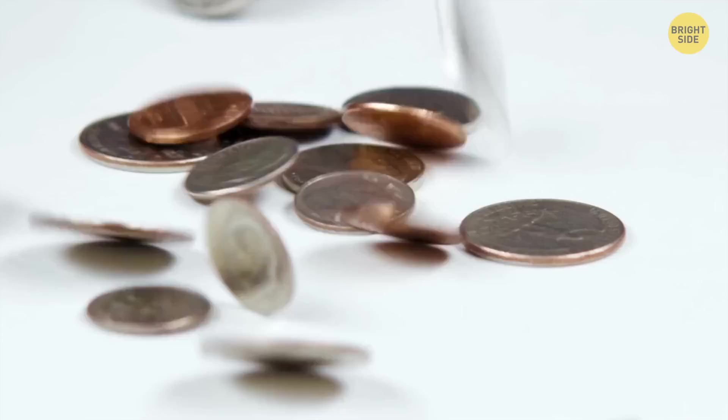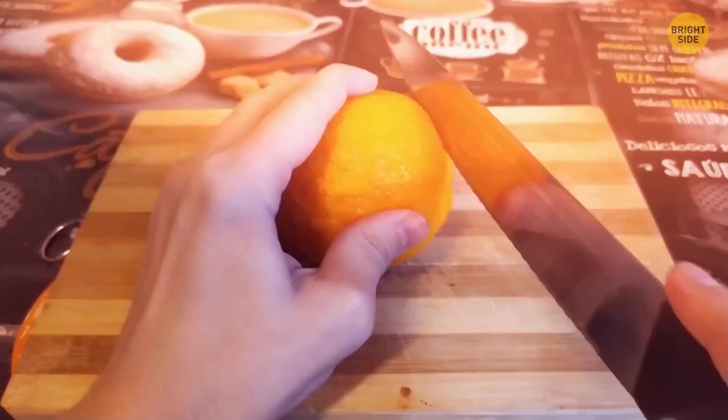If you still struggle with peeling an orange, here's another way of opening it. First, cut off the top and bottom. Make a slit on the side and pull it open.